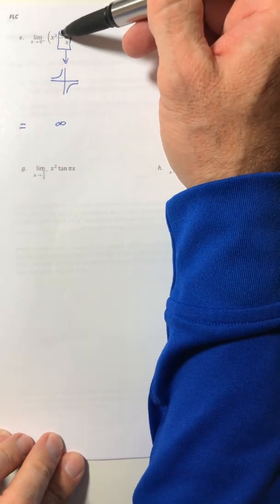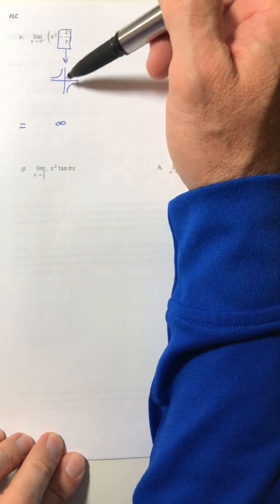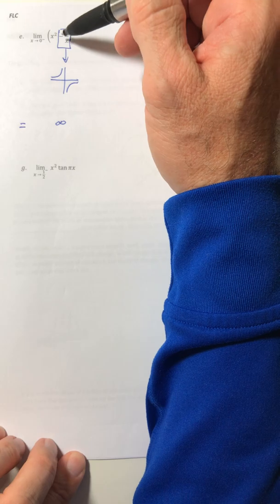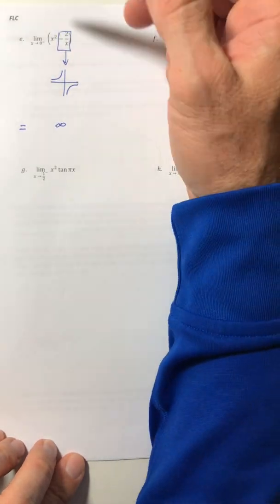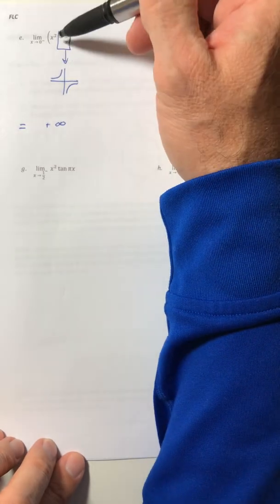And the negative has already been accounted for. If you didn't account for it, your graph would have been upside down. And then you would have a negative negative infinity, which comes as a positive. Either way. So that's the fraction.